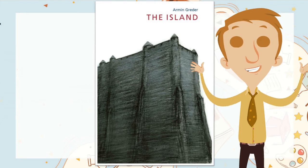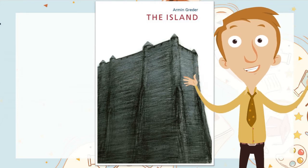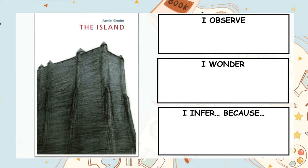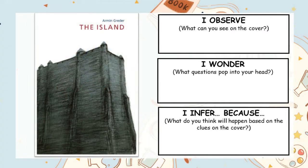Remember, these picture books are not like The Hungry Hungry Caterpillar. Often, the pictures tell a huge part of the story, and the questions that come up are deep philosophical questions. So like always, let's start off by completing an OWI chart on the cover of the book. The O stands for what I observe — that's what you can see on the front cover for sure. The W stands for I wonder — what questions pop into your head? And the I stands for I infer — what do you think will happen based on the clues you found? Pause the video and complete your own OWI chart for this book.